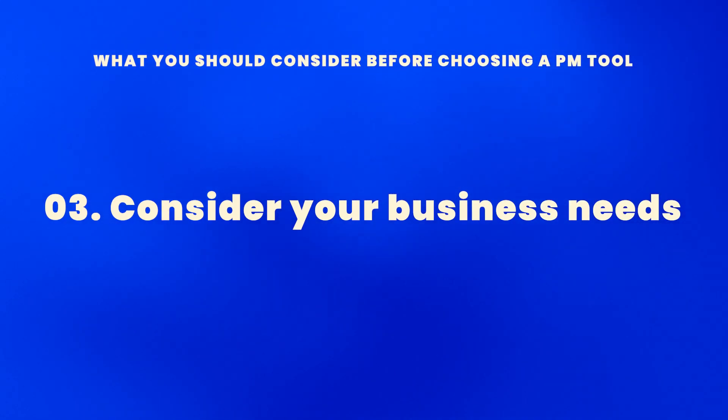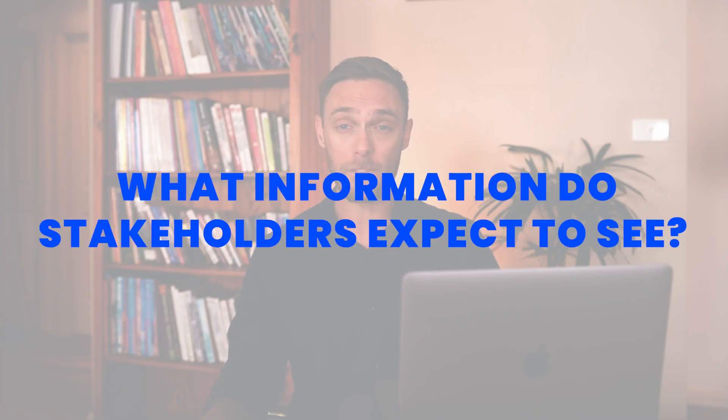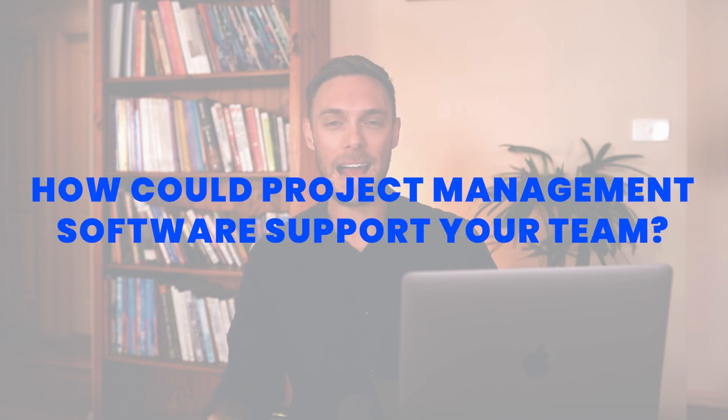Which brings us to our next point — you need to consider your business needs. There are four very important questions that you should ask: What information do stakeholders expect to see? At what frequency and level of detail do they want to see it? What is the project team's work style? And how could project management software support your team? Gather your project team to discuss what they would need to successfully complete the project by defining key elements like the number of teams involved, the project's complexity and flexibility, timeline and budget.